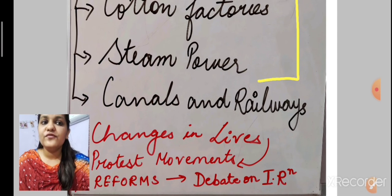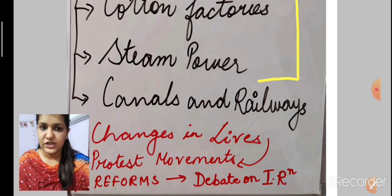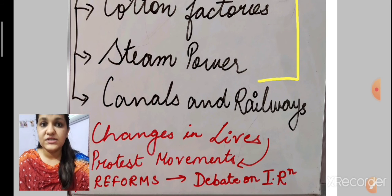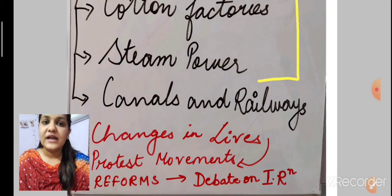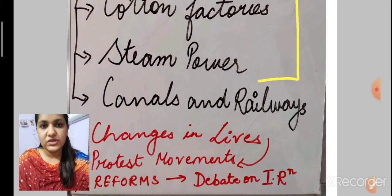Because of severe bad working conditions, the workers started to protest. We will read about the protest movements, and because of these protests, there were some reforms in Britain regarding the working conditions of the workers. We are going to focus on that.